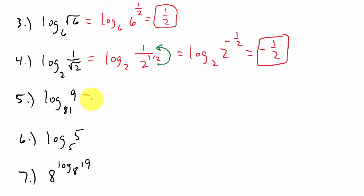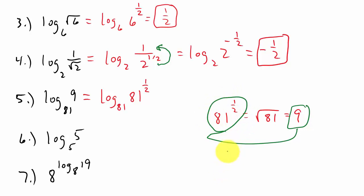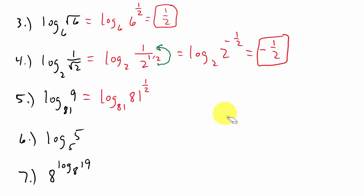Next, log base 81 of 9. We need to rewrite 9 as 81 raised to a power. Well, 81 to the one-half is the same as the square root of 81, which is 9. So we rewrite 9 as 81 to the one-half, and since the bases are the same, our answer is our exponent, which is one-half.